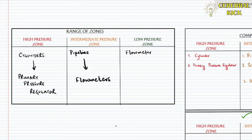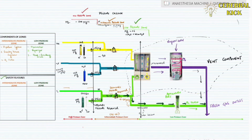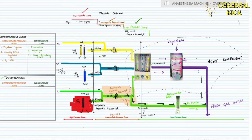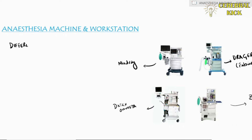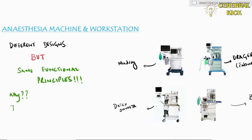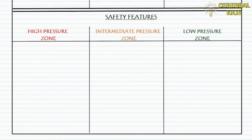To sum up: the high pressure zone runs from cylinders to the primary pressure regulator; the intermediate pressure zone begins from the pipeline all the way to the flow meter assembly and flow meter valve; and the low pressure zone runs from the flow meter to the common gas outlet. Various companies make anesthesia machines — Drager, Mindray, Datex-Ohmeda, and GE — but if you develop the basic understanding you will realize that all these different companies have not deviated from the basic working functionality and anatomy of the anesthesia machine, because patient safety is paramount. They have to go through the same safety protocols to avoid mishaps, and we will be covering the various safety features in the different pressure zones as we move along.